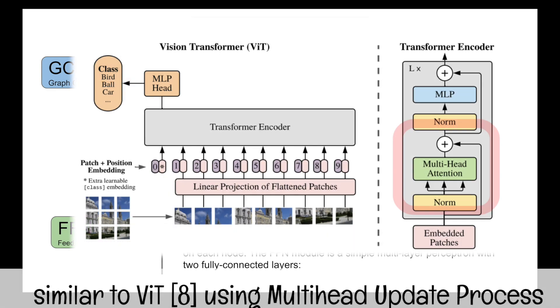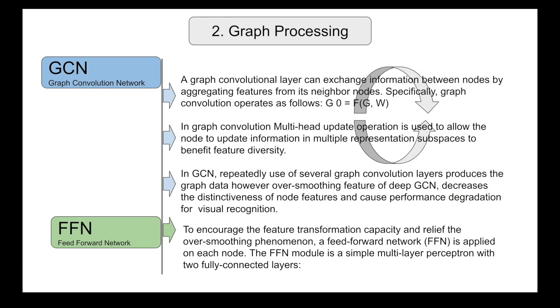Because there are several nodes and there are several features and there could be diverse features among different nodes. By using the multi-headed update operation, the multiple representations can be updated simultaneously. And finally you get the graph data which is the product of repeated use of several graph convolutional layers.